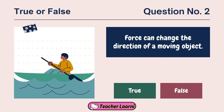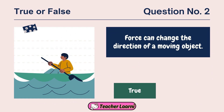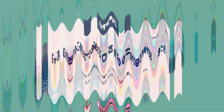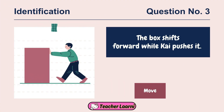Question number 2: Force can change the direction of a moving object. True or false? The correct answer is true. Question number 3: The box shifts forward while Kai pushes it. What will happen to the box? The correct answer is the box will move.